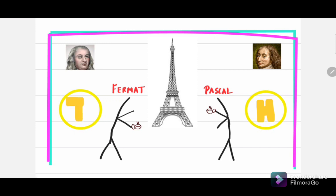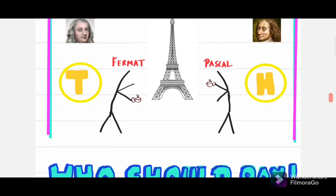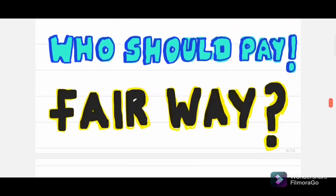They had a mutual agreement that whoever had fewer points after three coin tosses had to pay the bill. One day they got interrupted after the first coin toss and Fermat had to leave urgently. Later they wondered who should pay the bill.